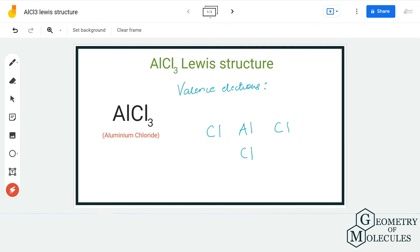Hi guys, welcome back to our channel. In today's video, we are going to do the Lewis structure for AlCl3 molecule. It is a chemical formula for aluminum chloride. To determine its Lewis structure, we will first start with valence electrons.